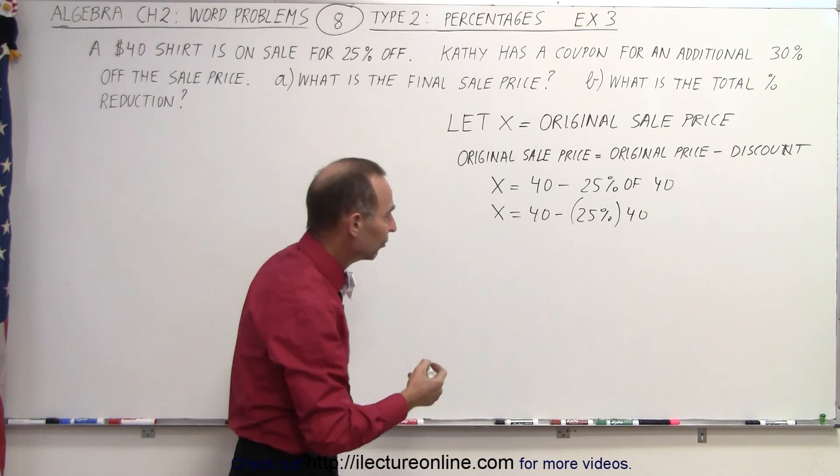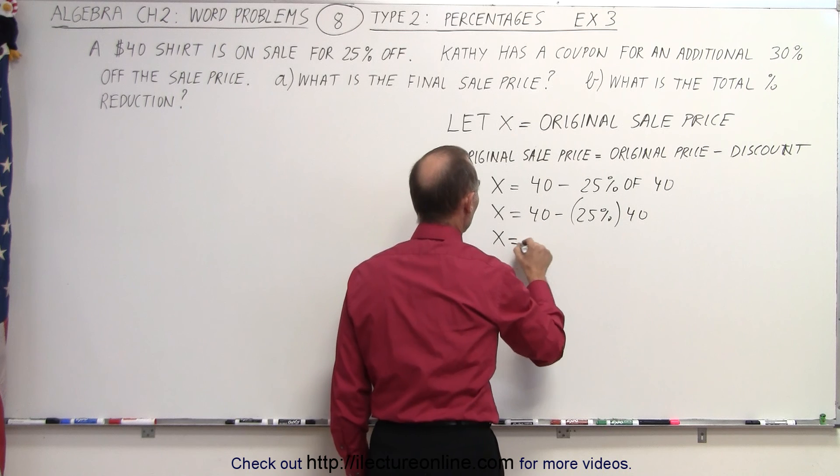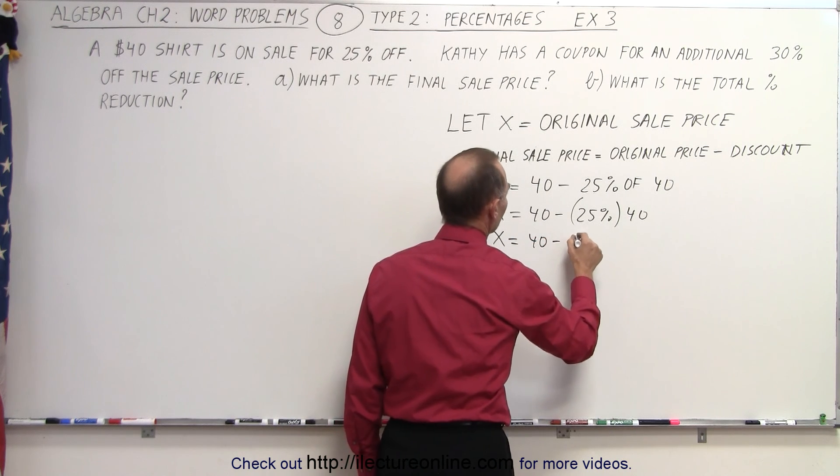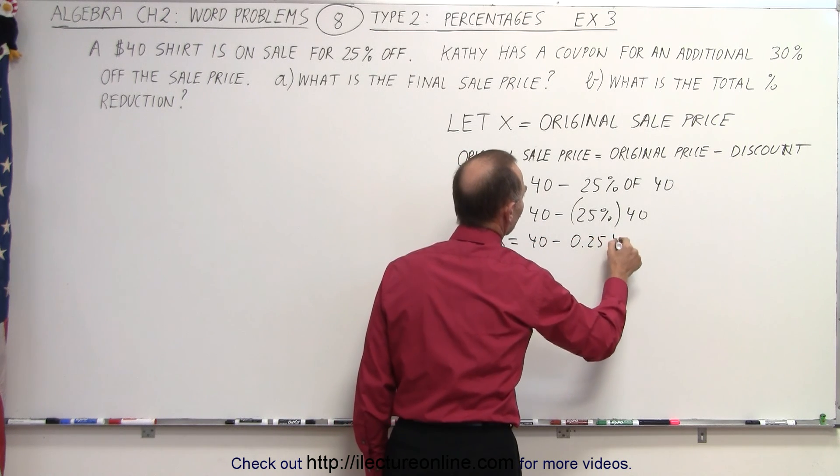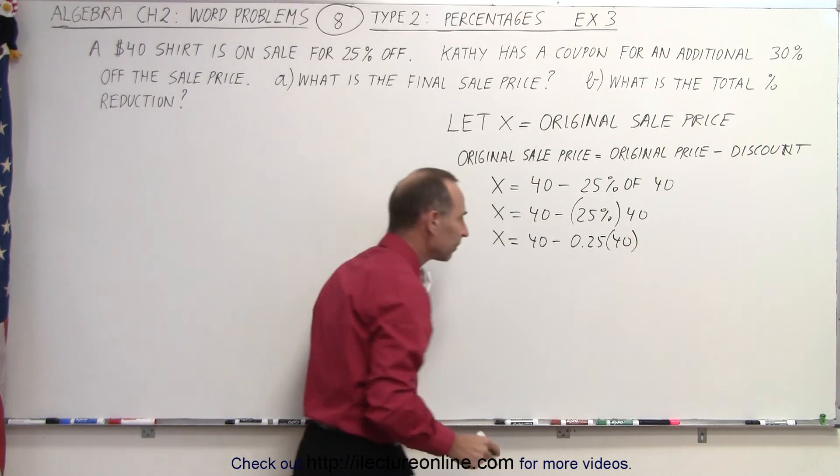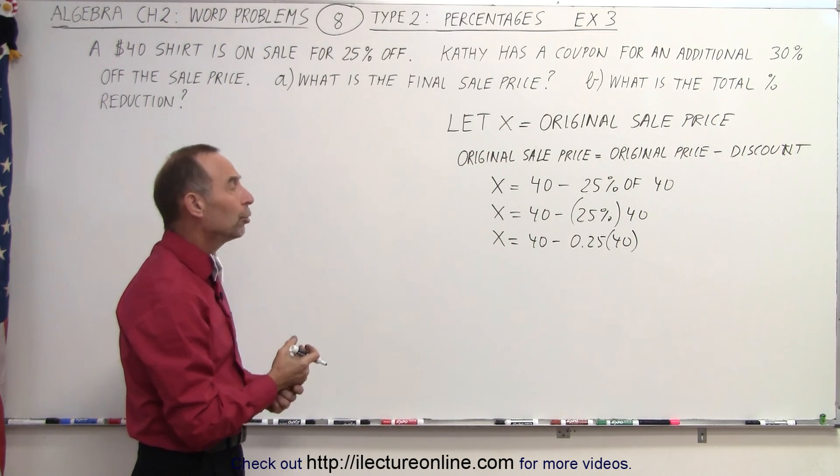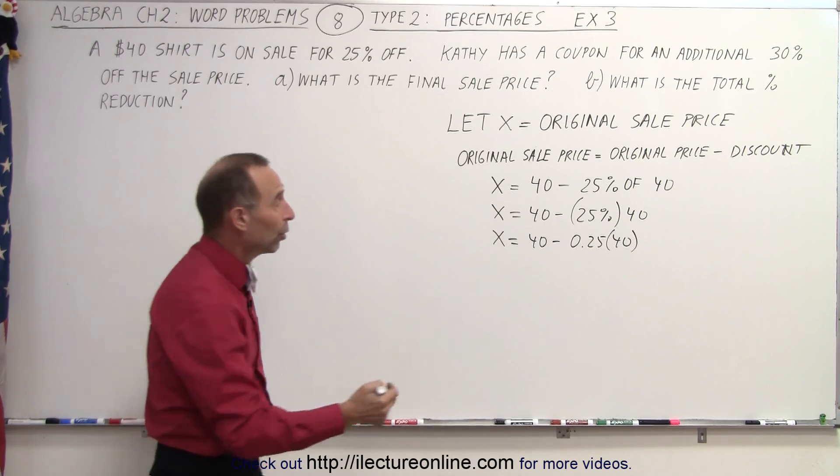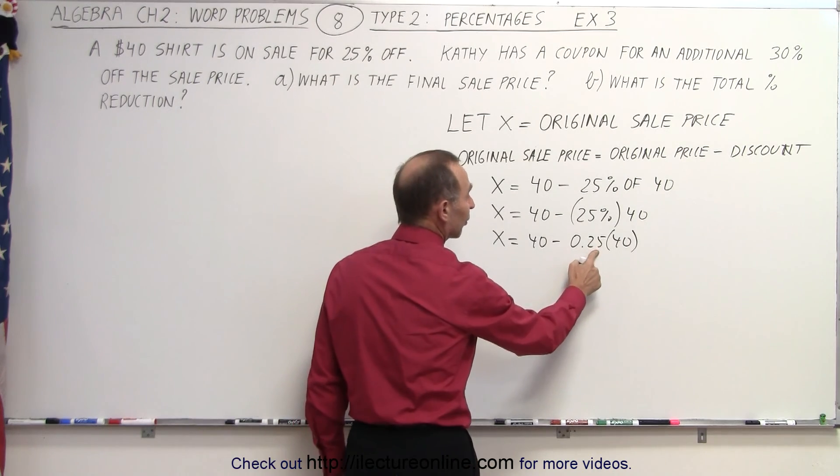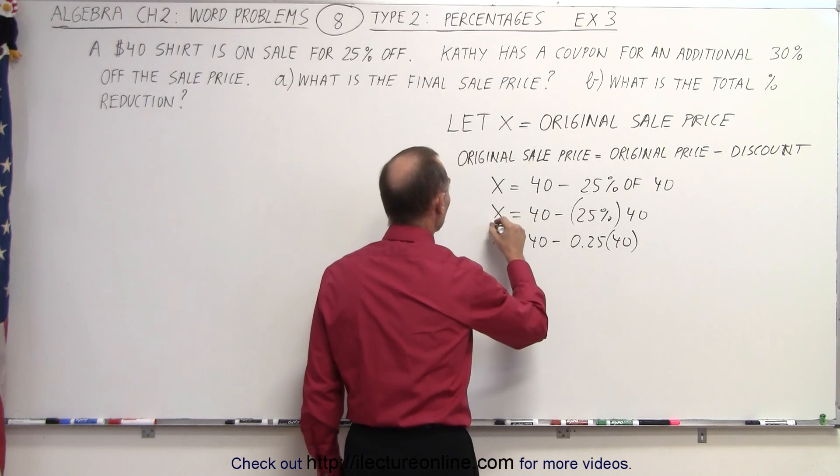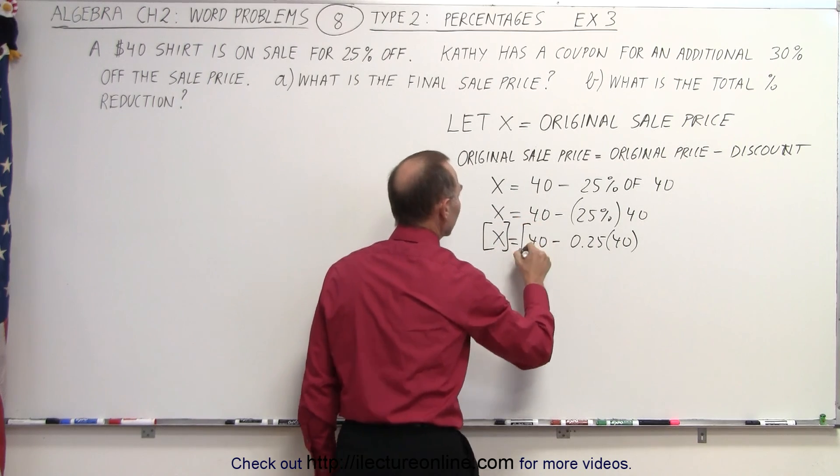So x equals 40 minus 0.25 times 40. If we can eradicate the decimal, we can either multiply by 100 or we can actually multiply by 4, since there's only one decimal point, and 4 times 0.25 gives us 1. So we multiply both sides of the equation by 4.